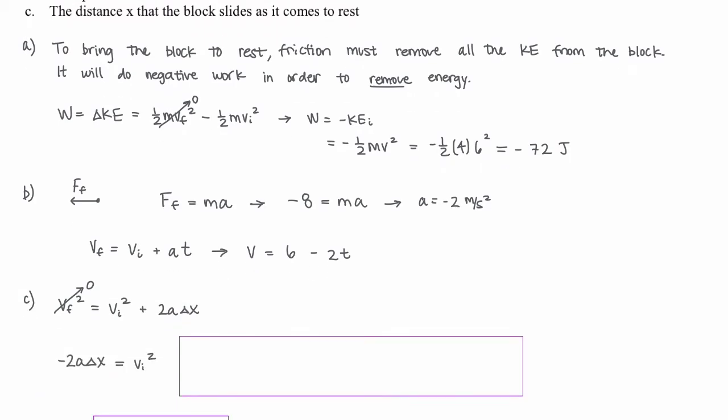Rearranging to solve for delta x, we get delta x equals v_initial² divided by negative 2a, which equals 6² divided by negative 2 times negative 2, giving us 9 meters.